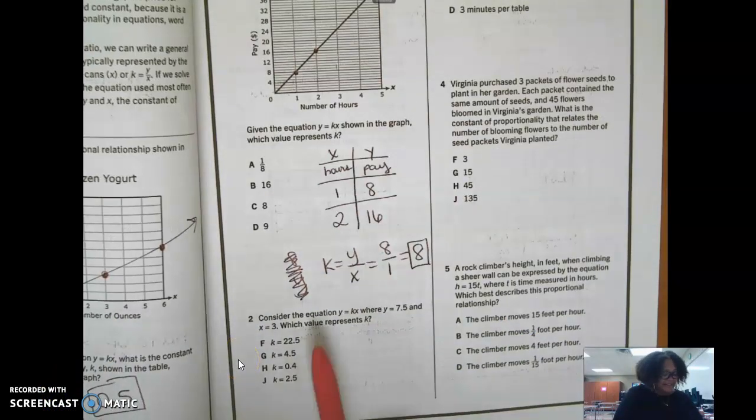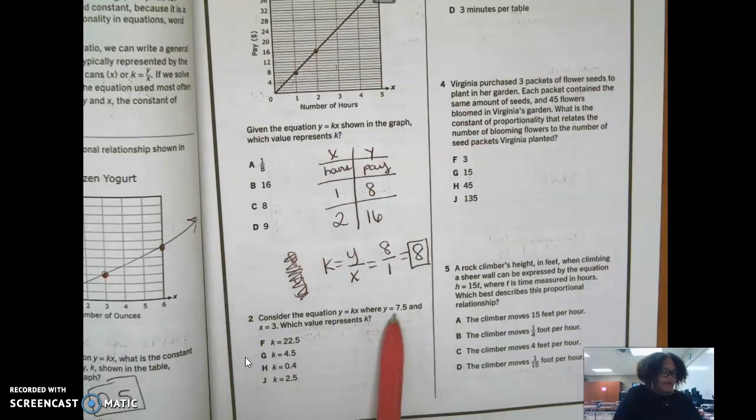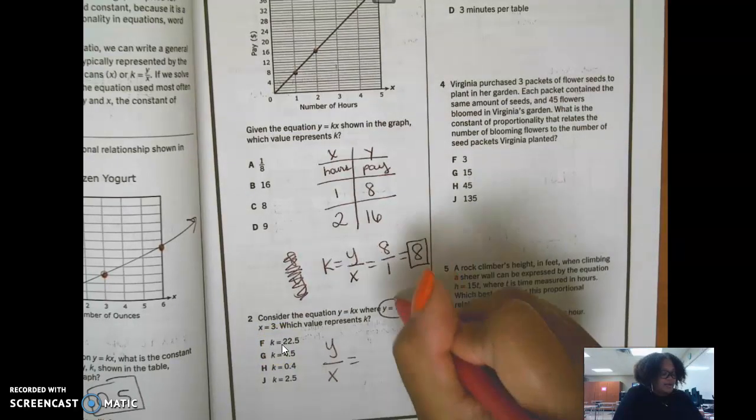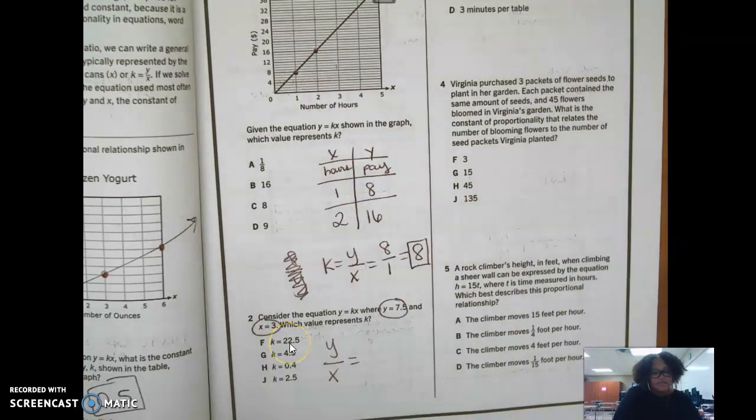This one, you're not going to get it. It says, consider the equation y equals kx, where y equals 7.5 and x equals 3. Which value represents k? So you're going to write y over x, and then you're going to take this number and this number and then divide them.